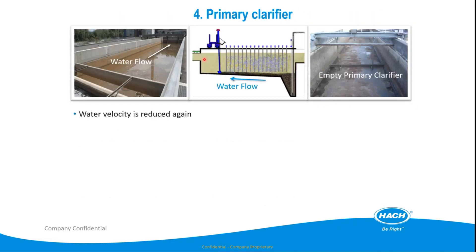Next is the primary clarifier — a long tank, either rectangular or circular. The purpose is to let sludge settle at the bottom and then remove it by scraper and sludge pump. At this step a part of TSS and some organic compounds in particulate state that can settle will be removed. We can remove about 30 to 35% of TSS and particulate organic compounds at this step.